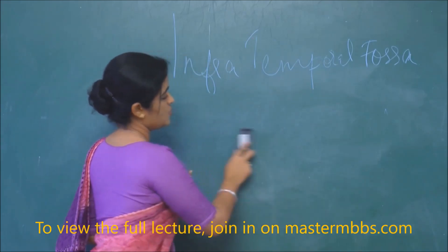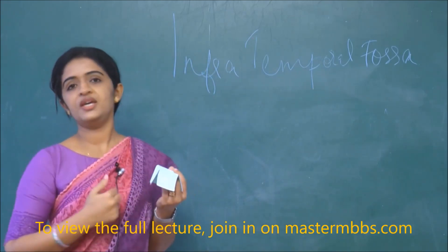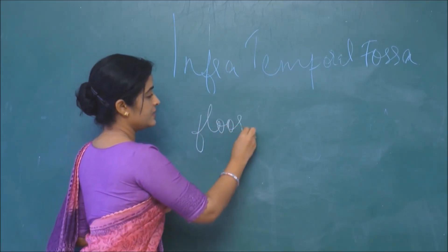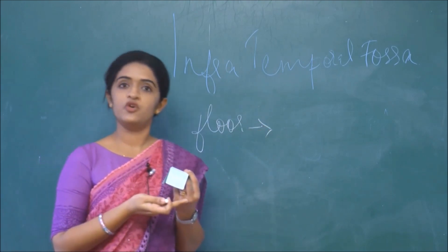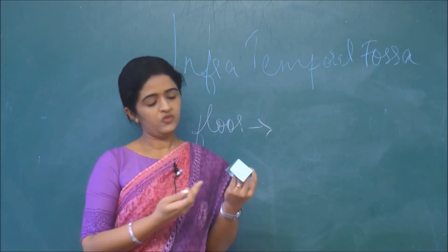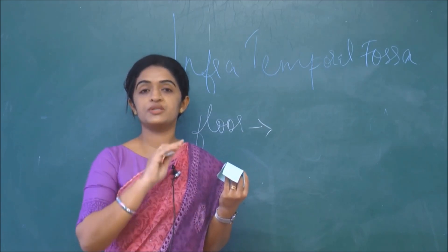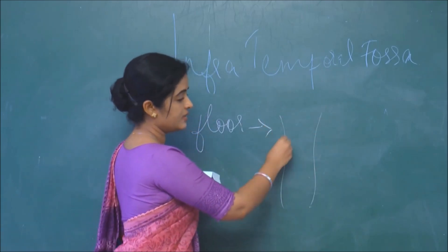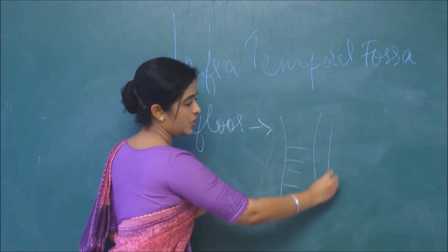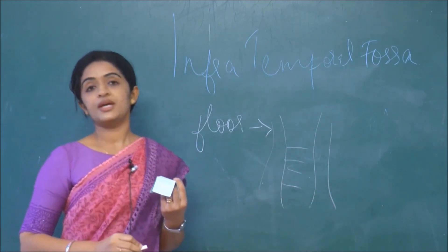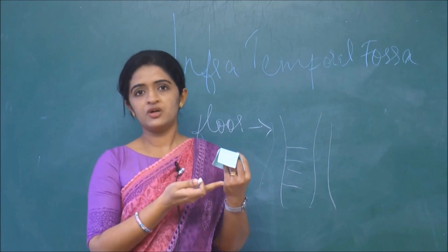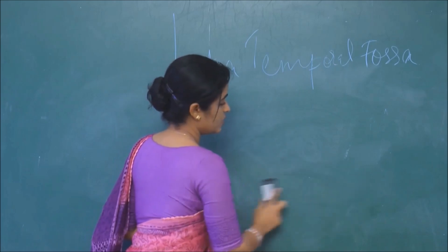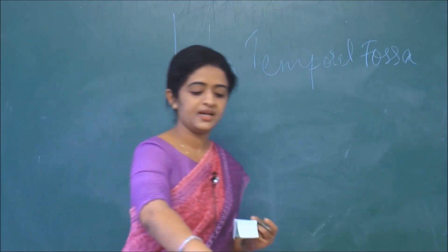The floor of the infratemporal fossa is not a closed side. It opens onto the sides of the pharynx, continuing down along the sides of the pharynx next to the vertebral column. That is why we do not count it as a proper wall.